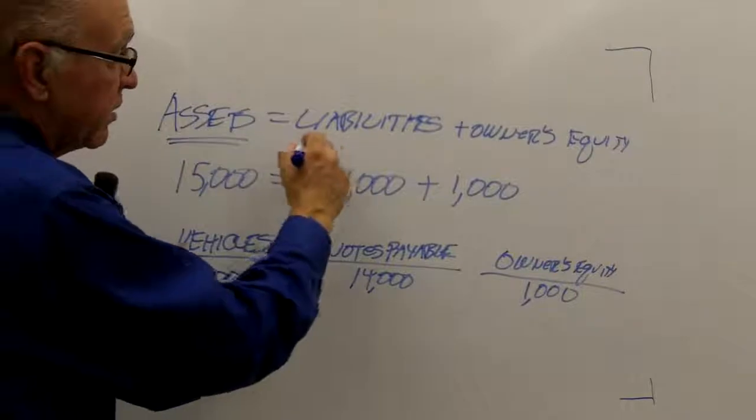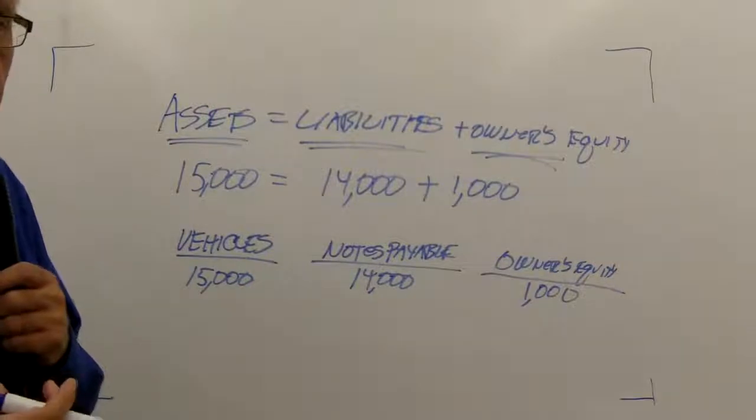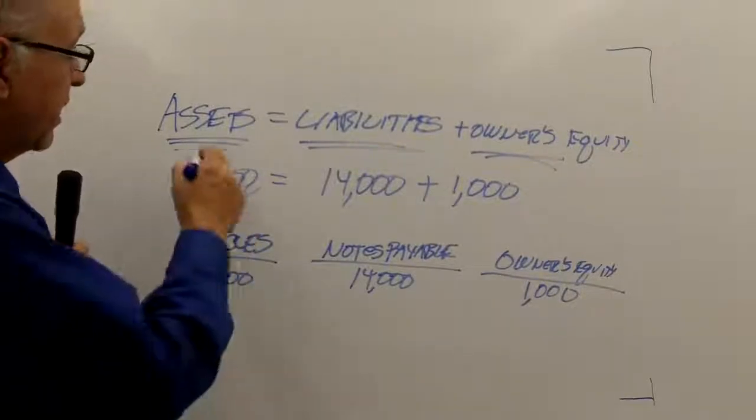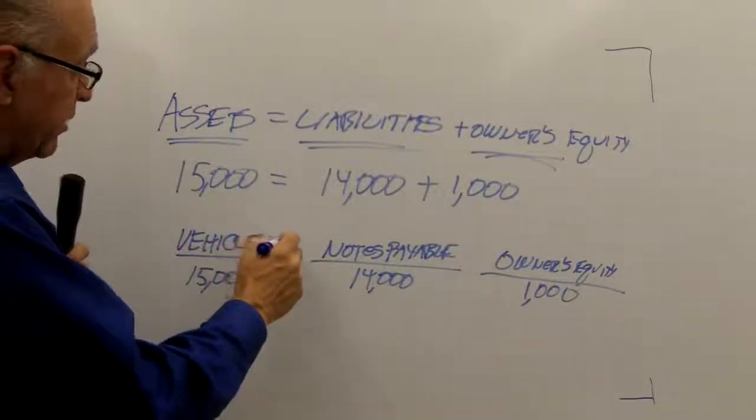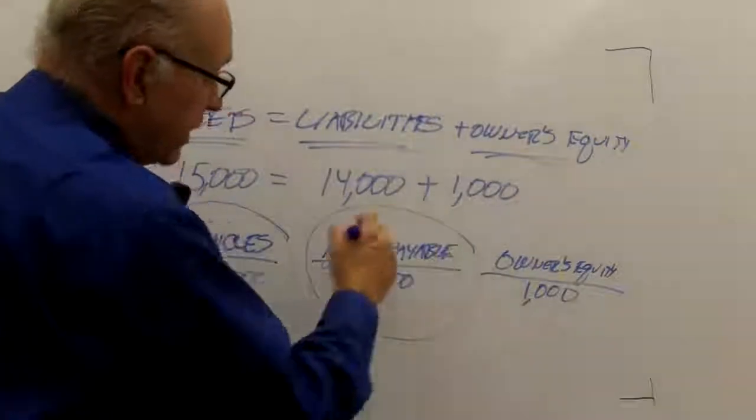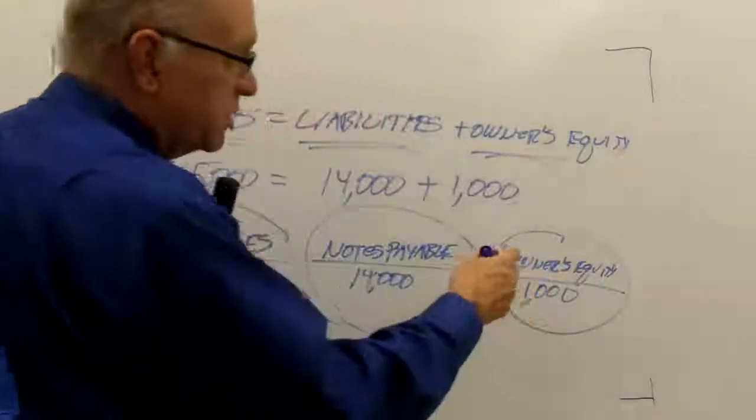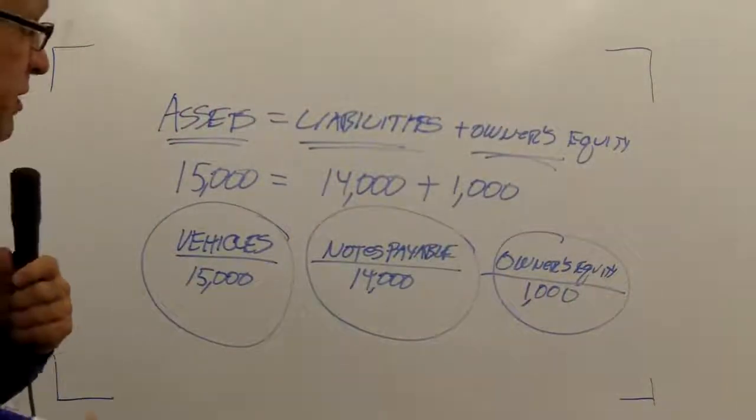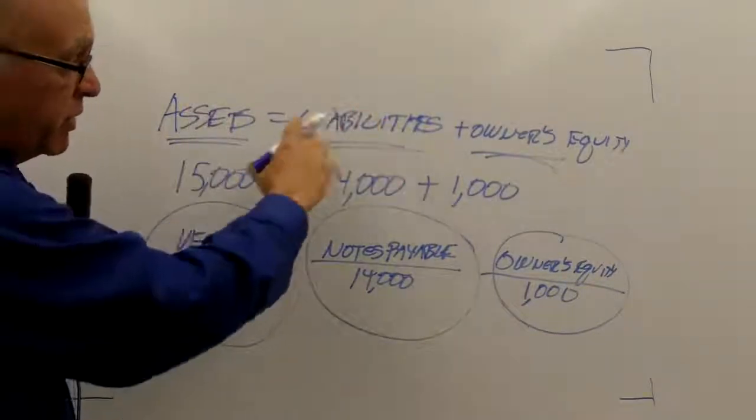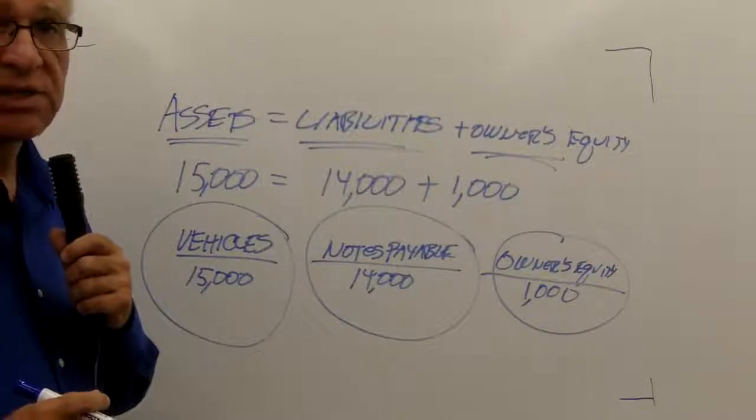Overall, assets equal liabilities plus owner's equity. But before we start talking about debits and credits, we have to understand accounts. And accounts fall within our accounting equation. So vehicles is an account that is an asset account. Notes payable is a liability account. Owner's equity is owner's equity - we'll show some other breakdowns of that in future segments. But our accounts fall within our major categories of our accounting equation, and that is assets equal liabilities plus owner's equity.